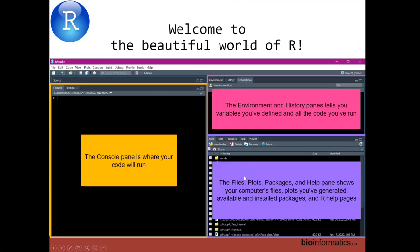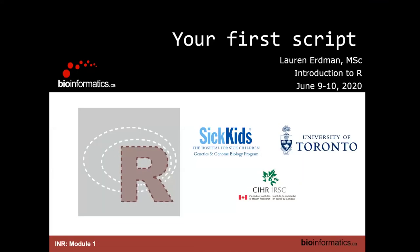Down here you have files, plots, packages, and help. The files pane shows your computer's files. The plots you generate will come out in this window, and you'll be able to export them to files, copy and paste them, or zoom in. And then there's also help — you can get help documentation directly from this pane.